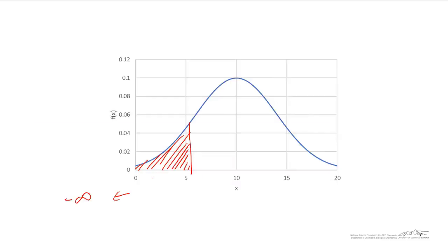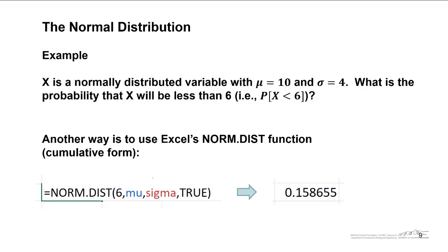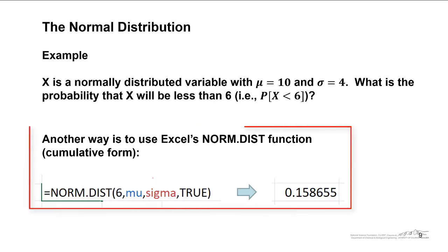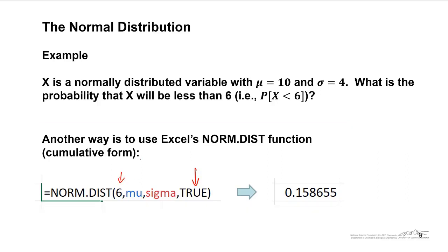That means 16% of the distribution area lies less than 6. Another way to do this is to use Excel's norm.dist function. There is a cumulative form — you always want to use true as the last argument in the norm.dist function if you are trying to calculate cumulative distributions. The first argument is the x value, 6 in this case. Then you have your average of your distribution and then your standard deviation, so we have mu and sigma named, and I will show you how to do this in a minute.